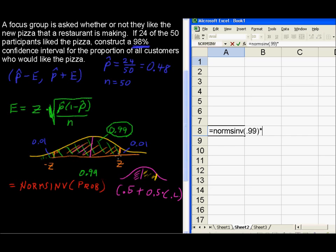But I'm going to say, go ahead and multiply by the square root of, and open up the parentheses, and it's proportion. We've got 0.48 multiplied by 1 minus 0.48, and I know you could put in 0.52, that's fine.